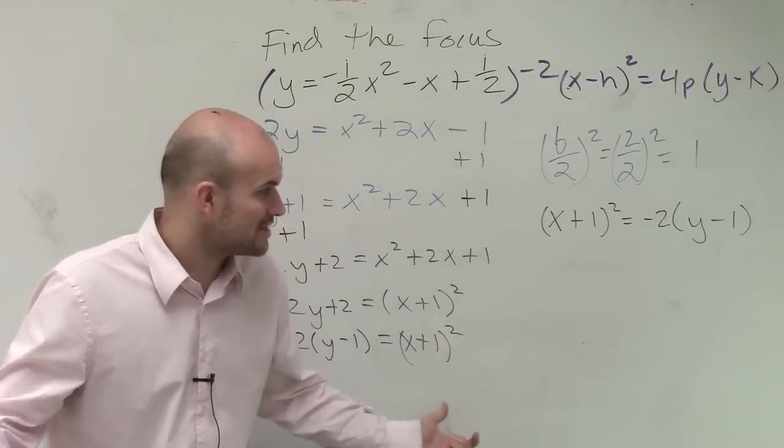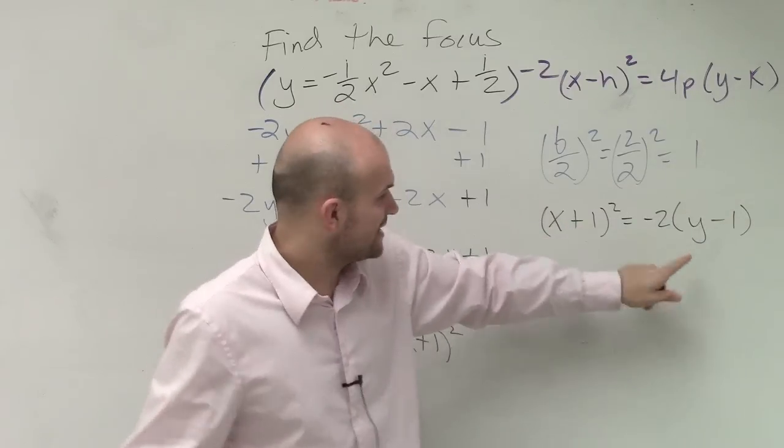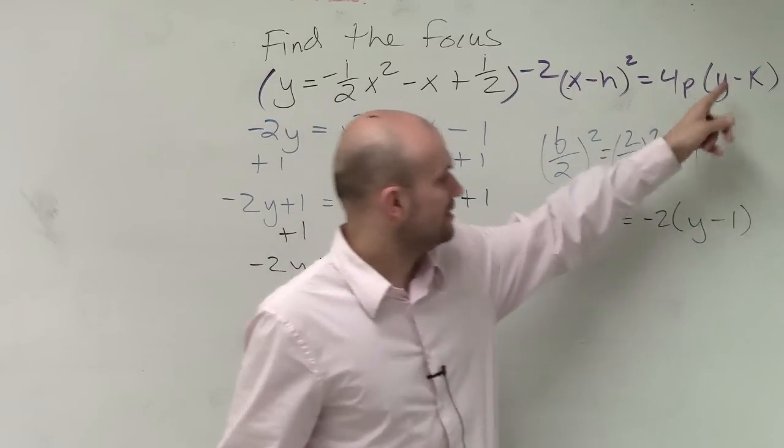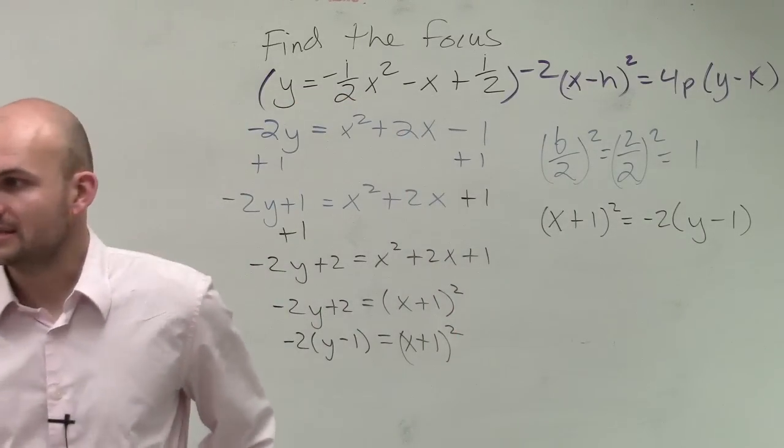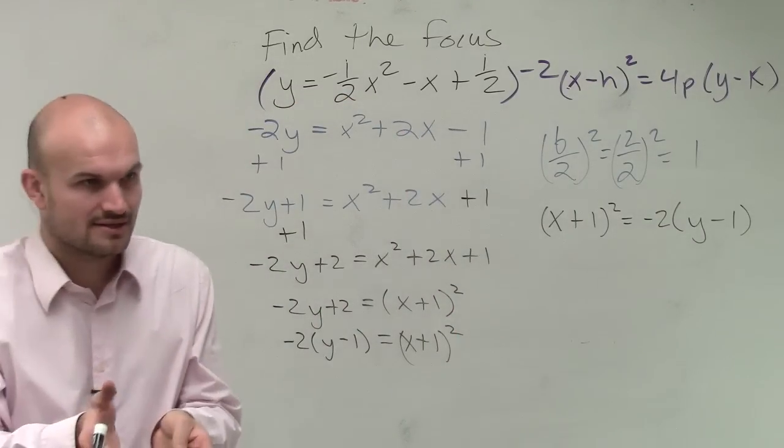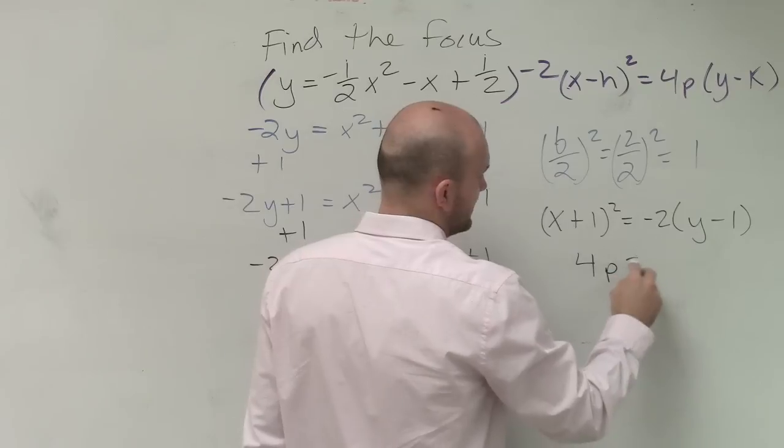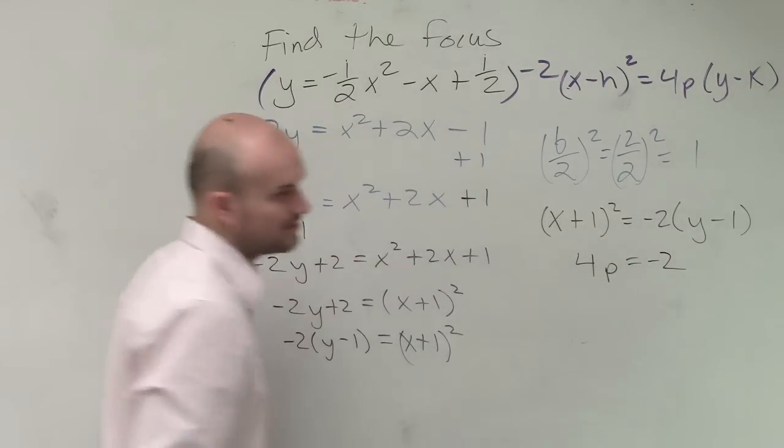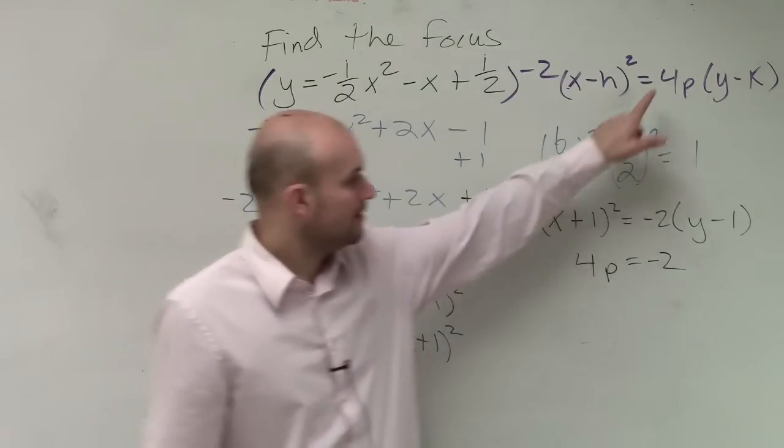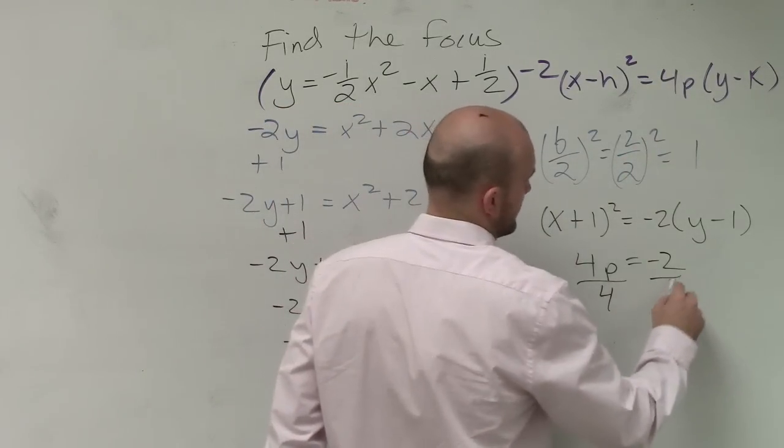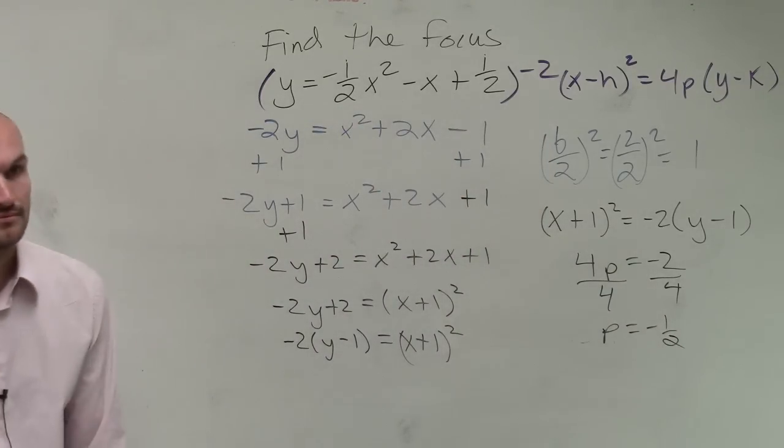So ladies and gentlemen, we're on our final stretch. All we need to do is figure out what the value of p is. So if you look at this, you have x is x, h is 1, k is negative 1. So we need to figure out what p is. p is the distance between our focus and our vertex. So 4p equals negative 2. This is equal to this. So then we solve for p. So we could say p equals negative one-half.